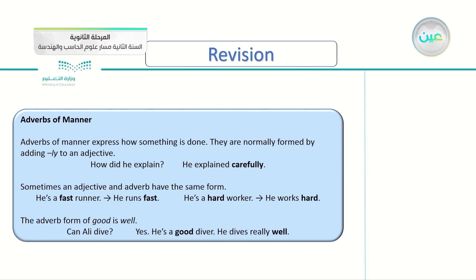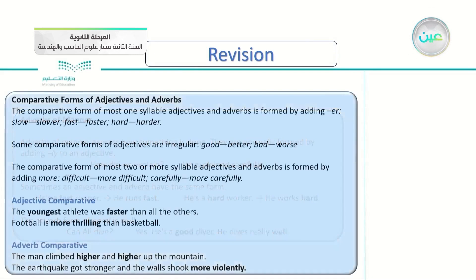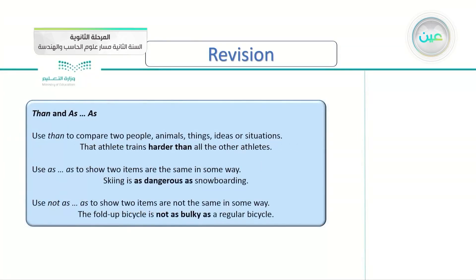Exceptions include 'fast' — 'he's a fast runner, he runs fast' — and 'hard' — 'he's a hard worker, he works hard.' Also 'good' becomes 'well.' We also took the comparative forms of adjectives and adverbs: for one-syllable adjectives we add -er; for two or more syllables we add 'more,' for example 'more carefully,' 'more difficult.' Irregulars: 'good' becomes 'better,' 'bad' becomes 'worse.' We use 'than' to compare two things — 'the athlete trains harder than all other athletes' — and 'as...as' to show two items are the same, for example 'skiing is as dangerous as snowboarding.' We use 'not as...as' to show items are not the same.